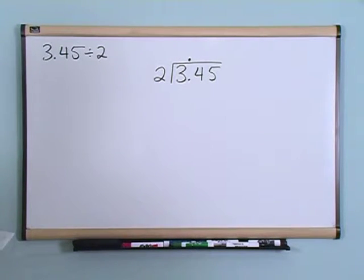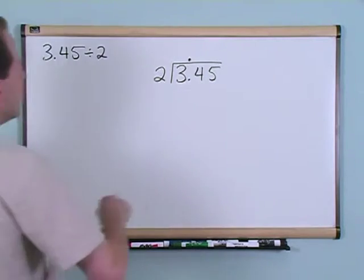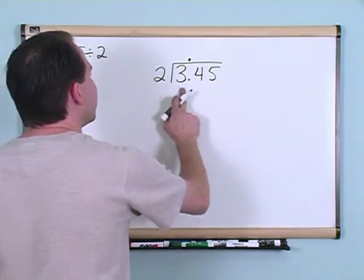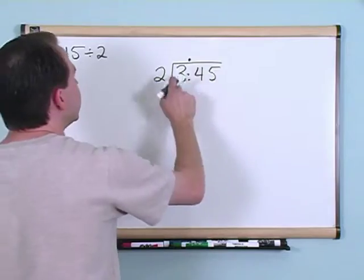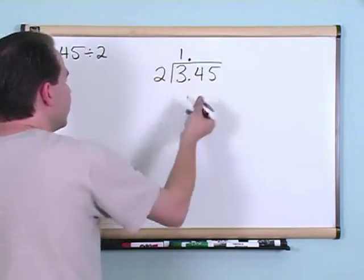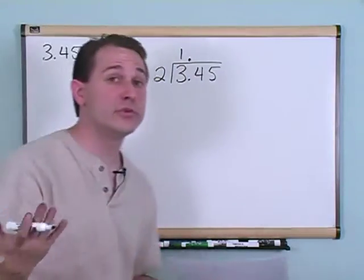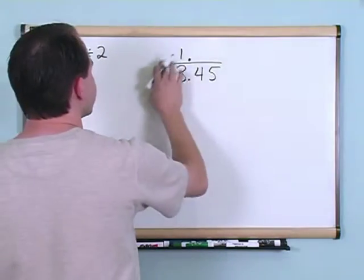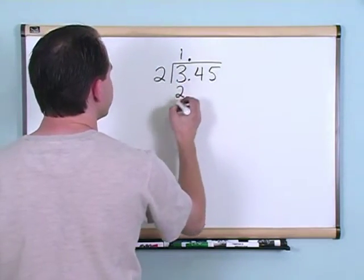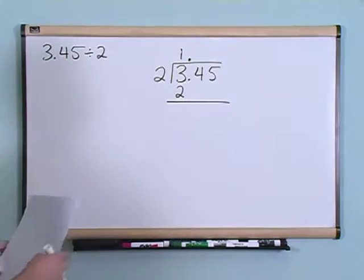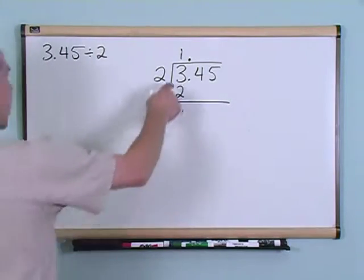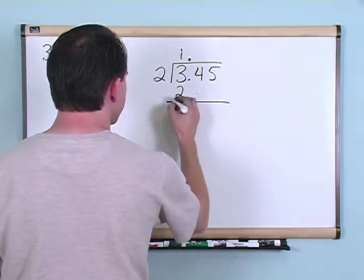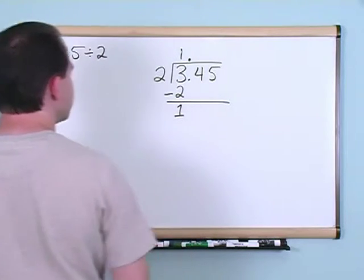Just like before, you say how many times can 2 go into 3? The answer is one time because 1 times 2 is 2, and 2 times 2 would be 4, and that's too many times. So it can only go one time. So we multiply, and 1 times 2 is 2, and we draw our line. Now we do some subtraction like we always do. 3 minus 2 is going to give us 1.